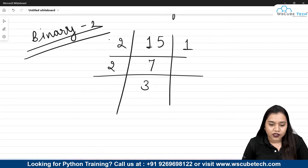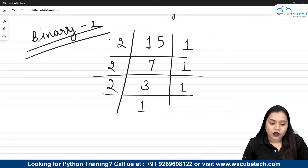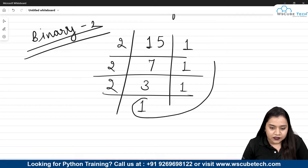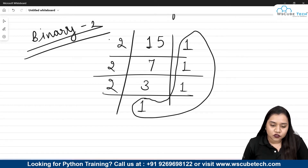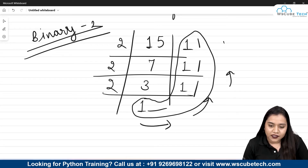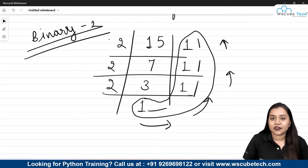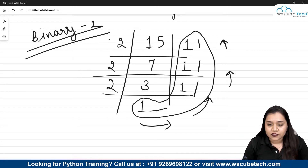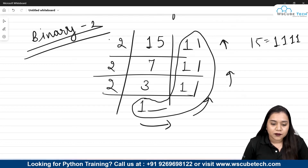Similarly, we divide again: 7 divided by 2 gives quotient 3 — 2 times 3 is 6 — with remainder 1. Then 3 divided by 2 gives quotient 1 — 2 times 1 is 2 — with remainder 1. Now, the binary number is formed by reading the remainders. The binary string is written from bottom to top, so the binary number for 15 is 1, 1, 1, 1.